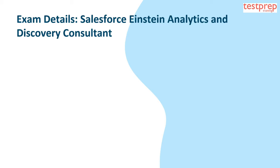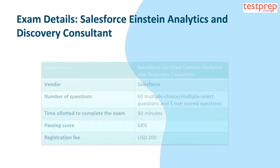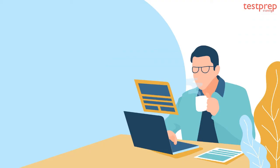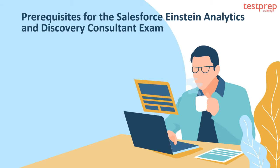Exam details for the Salesforce Einstein Analytics and Discovery Consultant: exam name — Salesforce Certified Einstein Analytics and Discovery Consultant; vendor — Salesforce; number of questions — 60 multiple choice or multiple select questions plus five non-scored questions; time allotted — 90 minutes; passing score — 68 percent; registration fee — 200 US dollars.